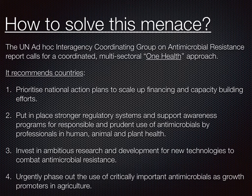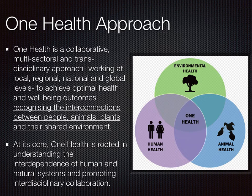A UN agency has recommended a multi-sectoral One Health Approach to solve this problem. One Health Approach means you do not look at human health in isolation — you combine human health with animal health, and both with plant health and environmental health. This approach means human health is dependent upon animal health, and both are dependent upon environmental health. All health — of the environment, animals, and humans — is interconnected, so we must address it together.